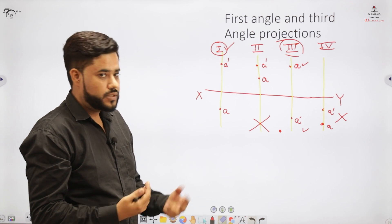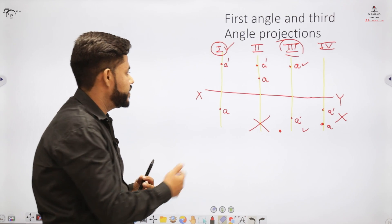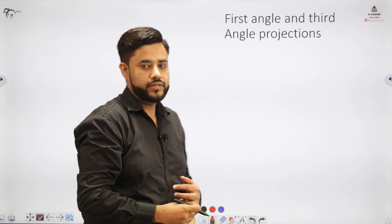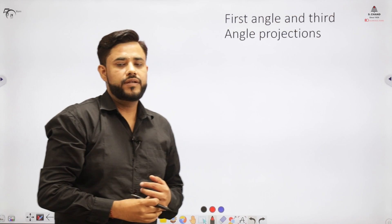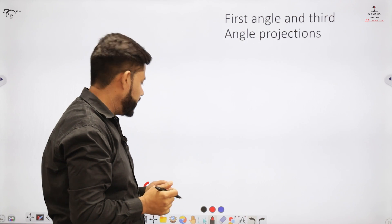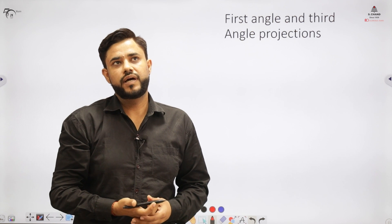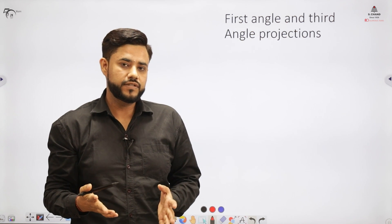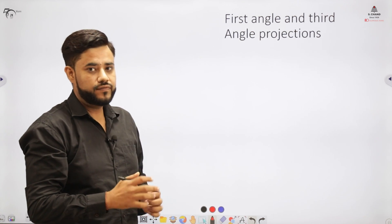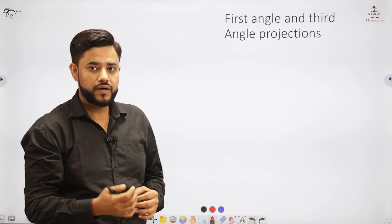How does one understand whether a drawing uses first angle or third angle projection? We have a symbol for that. In my initial lectures — perhaps lecture number one — I told you about the title block. In the title block, I showed you a symbol. In a technical drawing, this symbol must be indicated so that it is clearly visible which projection system was used. For that, we have different symbols: one for first angle projection and a different one for third angle projection.